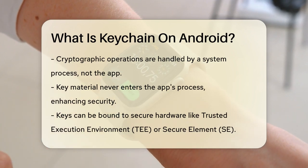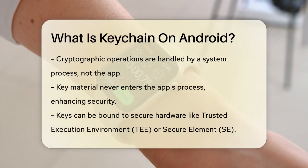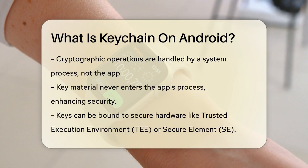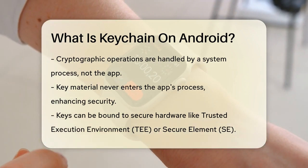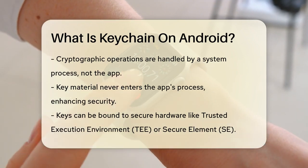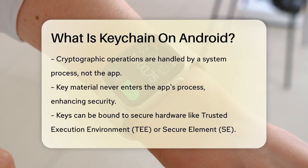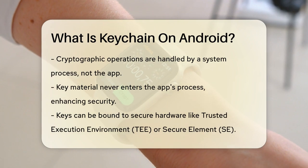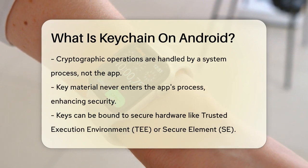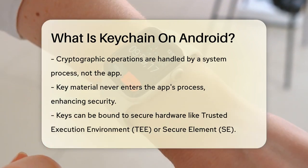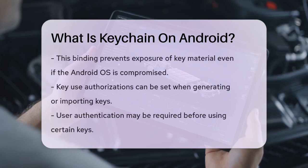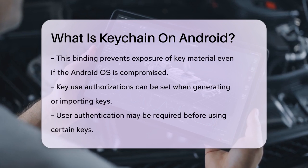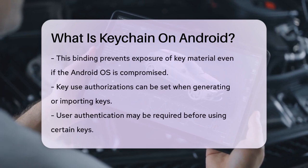The Keychain also lets you bind keys to the secure hardware of your device, such as the Trusted Execution Environment (TEE) or Secure Element (SE). This ensures that the key material is never exposed outside of this secure hardware, even if the Android OS is compromised.